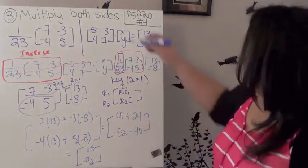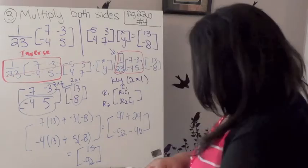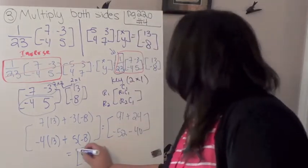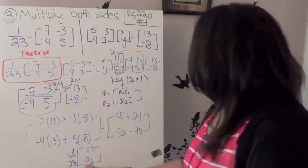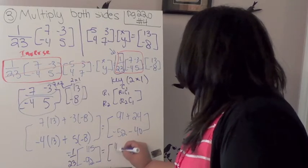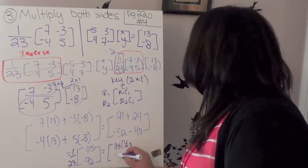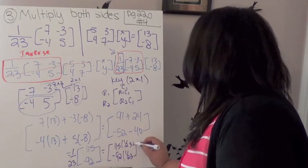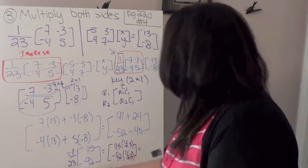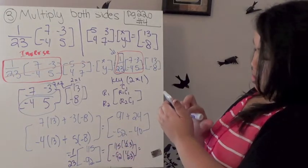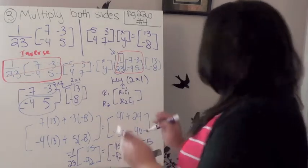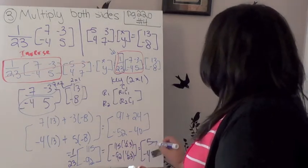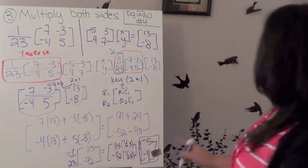Now, this would be our answer, but don't forget this right here. We still have a 1 over 23. So that means I have to multiply each one - 115 times 1 over 23, and negative 92 times 1 over 23. And then I get my final answer. So let's see. This is 5, and this is negative 4. So my answer is 5, negative 4.